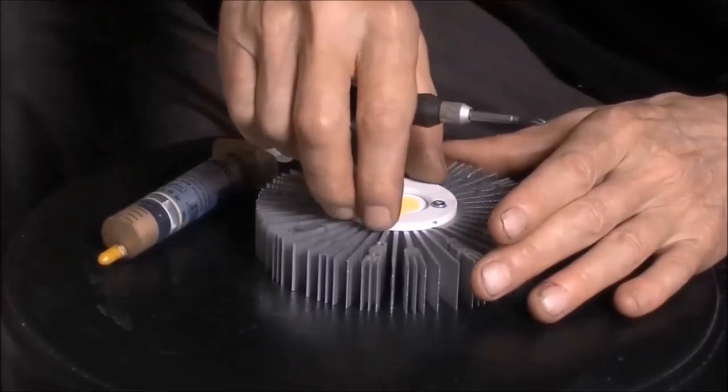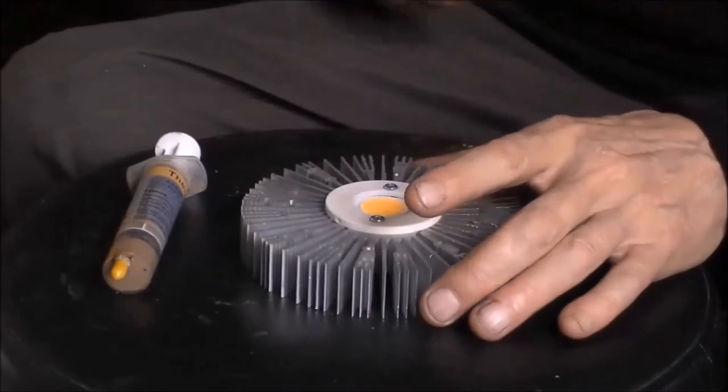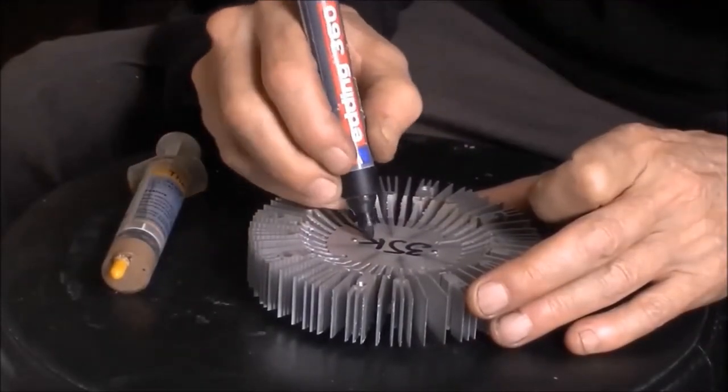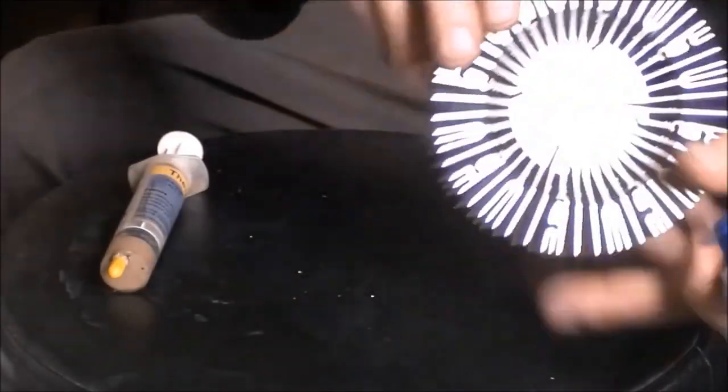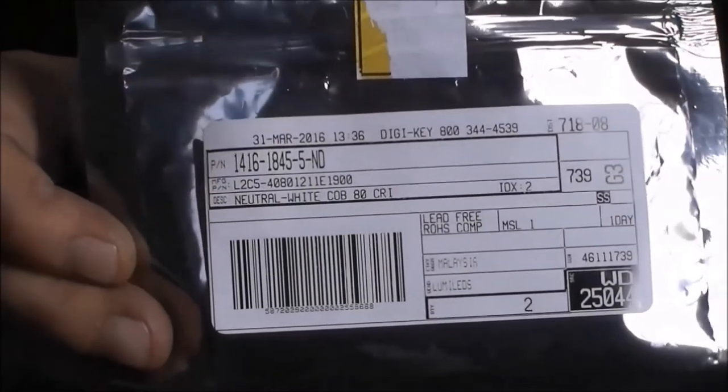If you've never applied heat sink paste before, it might be worth applying some and then removing that COB and cleaning it off and looking how complete the contact area was. Because essentially you want a complete, very thin contact area between the two.